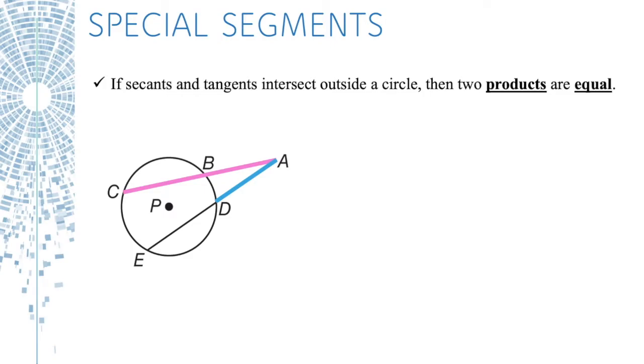here's our magic formula: AC times AB equals AE times AD. Let's look at this. AC is the whole segment, AB is just the external part of that segment. And then AE is the whole segment, AD is the external part of that segment. It might make more sense if we do an example.